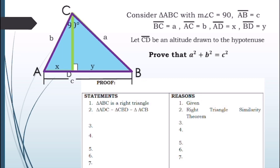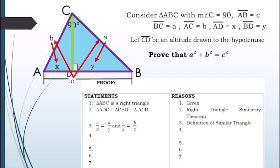For our third statement, c/a = a/y and c/b = b/x. The reason is by the definition of similar triangles. Based on this third statement, if we apply the fundamental rule of proportion, we get a² = cy and b² = cx. The reason is the fundamental rule of proportion.